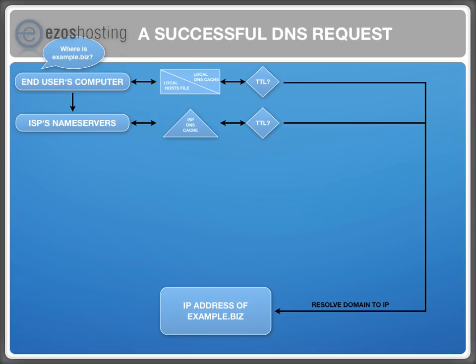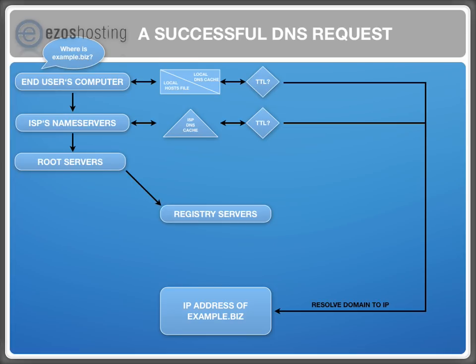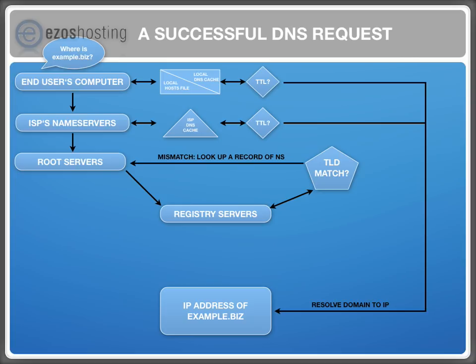If no information was cached, the ISP connects to the internet's root servers. They will look at the ending of the domain name — in this case it is .biz — and refer your question to the registry servers of .biz. The registry servers have the information of the name servers that are really responsible for the domain name. If they don't have the same ending as the domain name, they need to look up the IP address of the name servers first and redelegate the request to the root servers. This delays the whole process by 40 to 200 milliseconds on average. So it is important that if your domain name ends with .biz, your name servers should end with .biz as well.